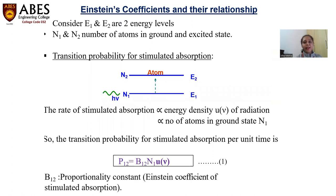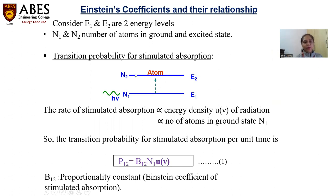These are the Einstein coefficients and their relationship. This is a long derivation. Here, we are going to find out the probability of absorption as well as emission. We consider two energy levels E1 and E2, where N1 is the number of atoms in the ground state and N2 is the number of atoms in the higher excited state.